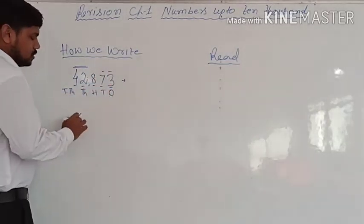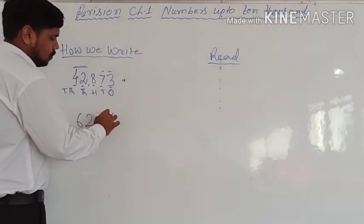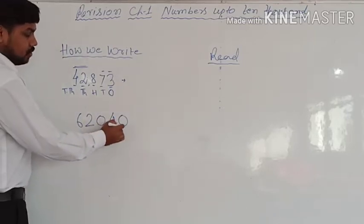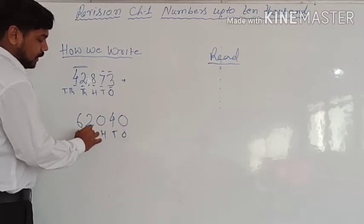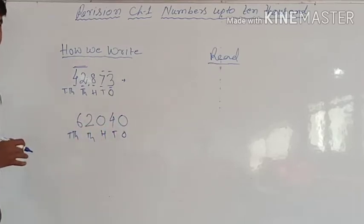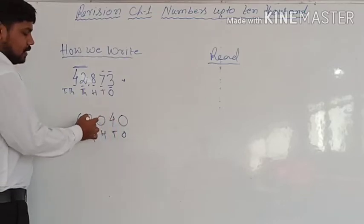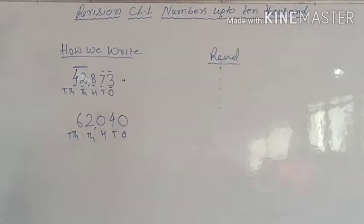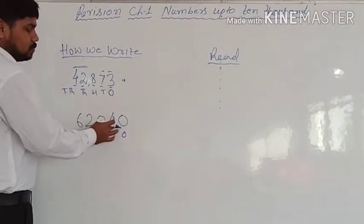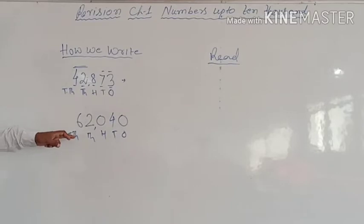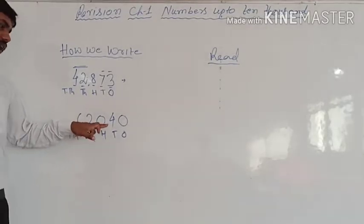Let's take another number: 62,040. In ones place: 0 — no number. Tens place: 4, so 40. Hundreds place: 0 — no number, leave it. Ten-thousands and thousands together give 62,000. So we read this number as sixty-two thousand and forty — 62,040.